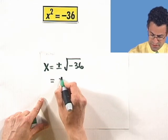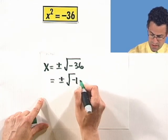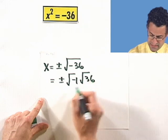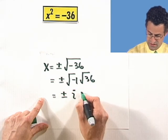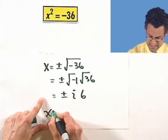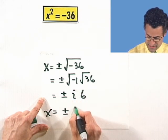And what's that? Well, that's plus or minus square root of negative 1 times square root of 36, which equals plus or minus i. Square root of 36 is just 6. And so I see x equals plus or minus 6i.